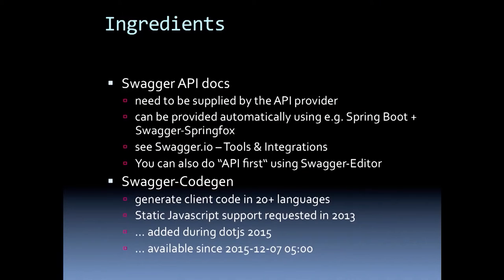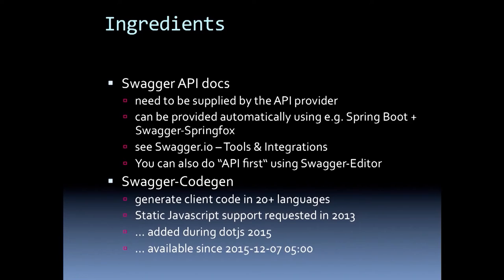What do you need for this? You need to provide Swagger API docs, which need to be supplied by the API provider. They can be provided automatically using Spring Boot and Swagger Spring Fox. For more information, go to swagger.io tools and integration. You can also do API-first using the Swagger editor. You have to use Swagger CodeGen, which allows you to generate client code in more than 20 languages. JavaScript support was requested two years ago — I implemented it in the last few days, and I'm glad it's available this morning. You can pick it from the master branch.